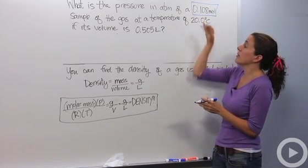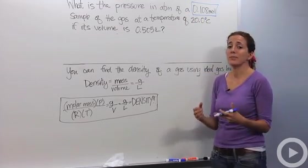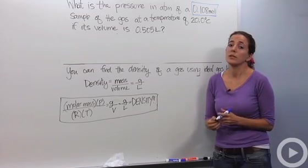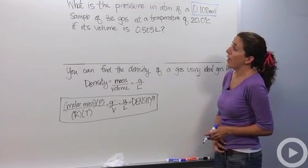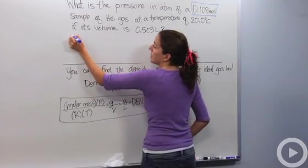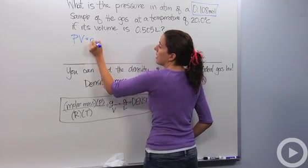Now remember, I told you ideal gas law is the only gas law that actually contains the number of moles within it. So I know when I'm given a mole sample or if I'm asked about the number of moles, I know I'm going to always be using the ideal gas law. So let's pull everything out. We have PV equals nRT.